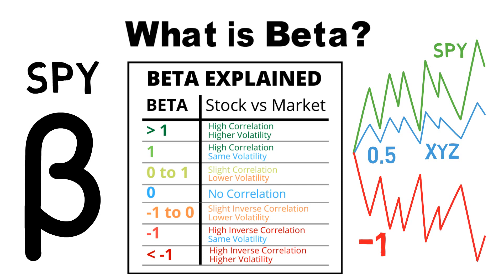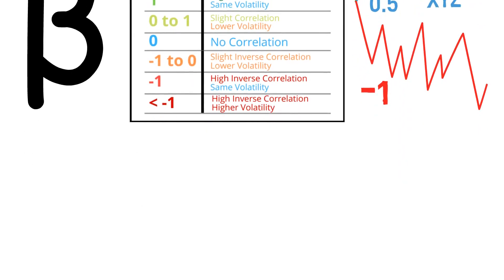So for every $1 move up in SPY, XYZ moves down by $1 and vice versa. Note that in reality this correlation is never this perfect. But the more correlated two securities are, the more reliable their beta values become.